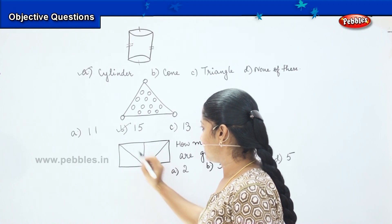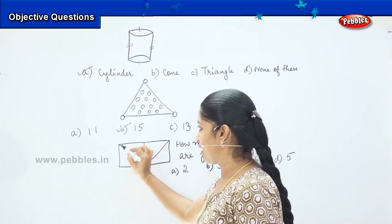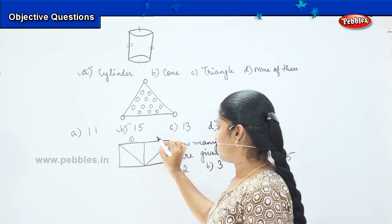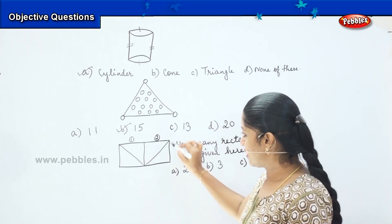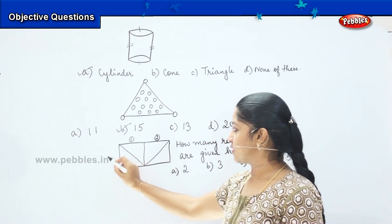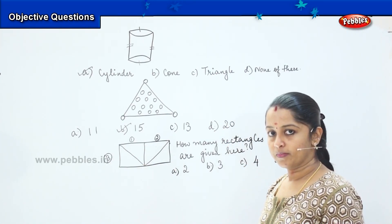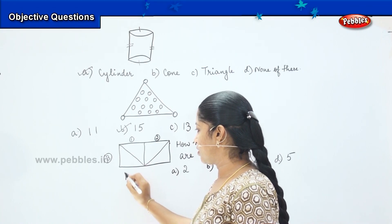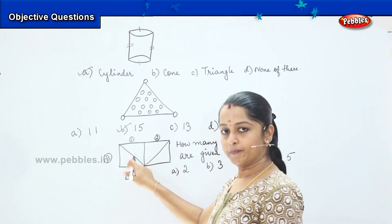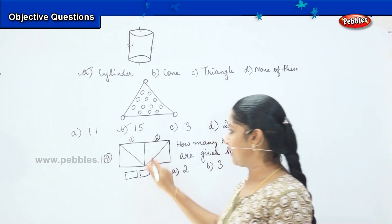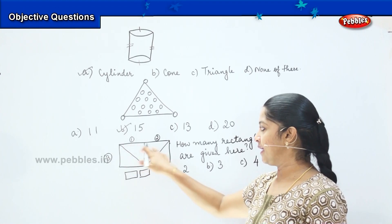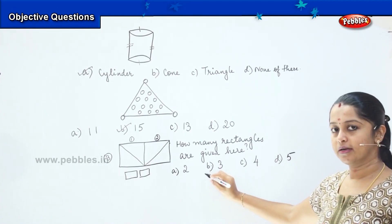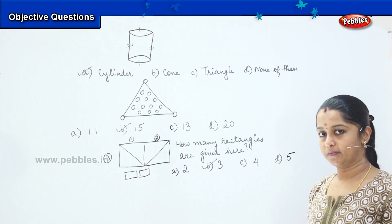So first is this rectangle — that is 1, 2, 3, and 4. This is rectangle 1. Then 1, 2, 3, 4 — this is rectangle 2. And the total of this picture is rectangle number 3. See here: the first rectangle, the second rectangle, and combining both together is the third rectangle. So how many rectangles are there? It is option B: 3.